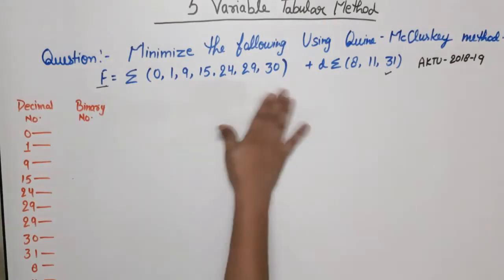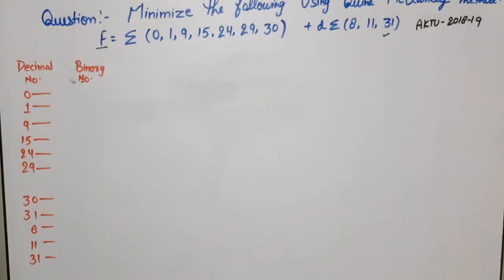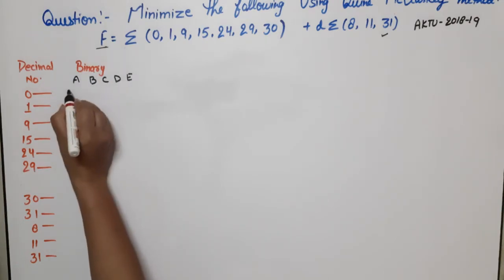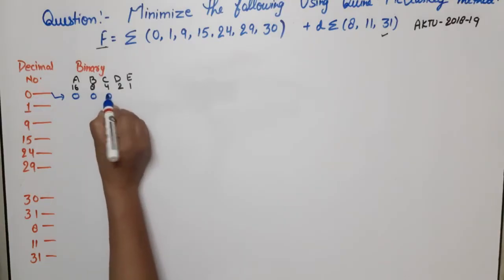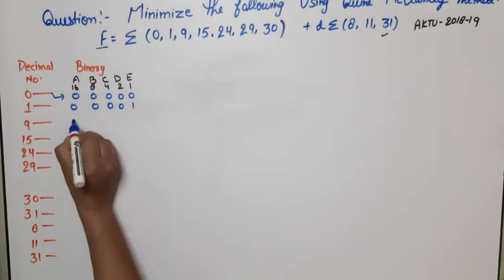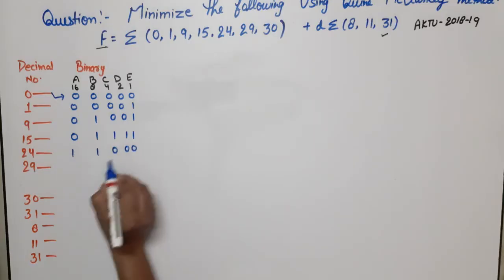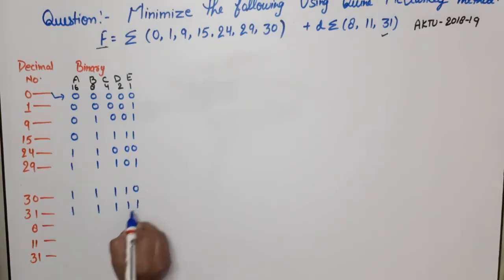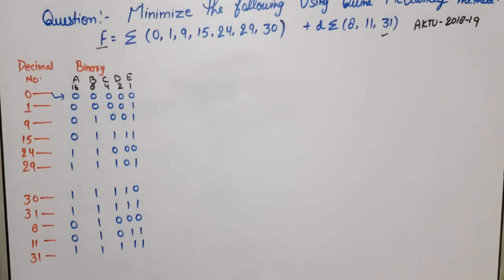Because the question does not mention that this is a 5-variable function, we determine it ourselves. There are 5 variables: A, B, C, D, E. The bit weights are 16, 8, 4, 2, 1. Now I will write binary equivalents. For 0: 00000. For 1: 00001. For 9: 01001. For 15: 01111. For 24: 11000. For 29: 11101. For 30: 11110. For 31: 11111. Don't cares — for 8: 01000. For 11: 01011. For 31: 11111. The first step is complete: we converted all decimal minterms and don't cares to their binary equivalents.